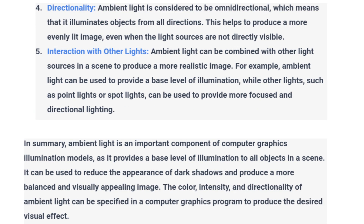Directionality: Ambient light is considered to be omnidirectional, which means that it illuminates objects from all directions. This helps to produce a more evenly lit image, even when the light sources are not directly visible.